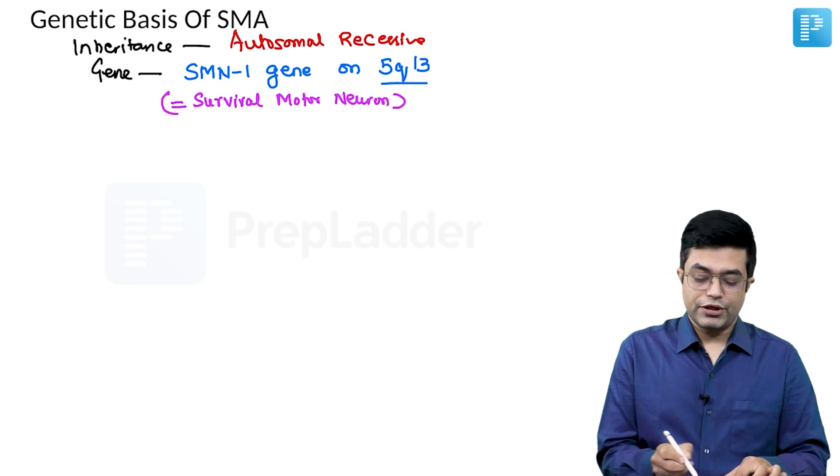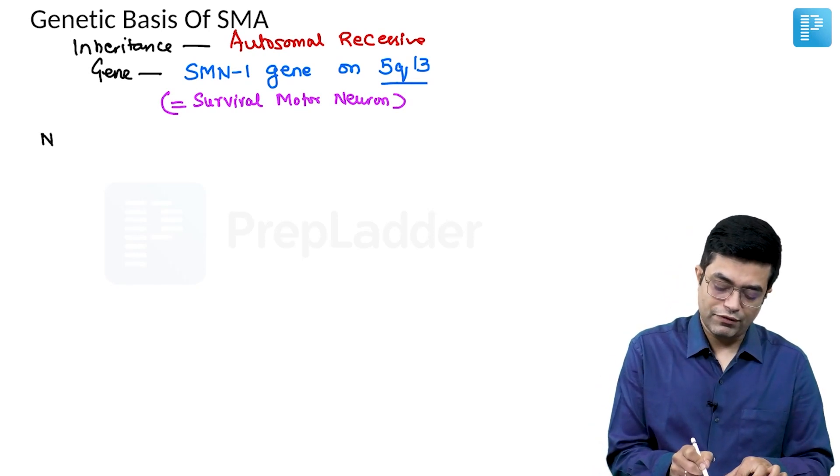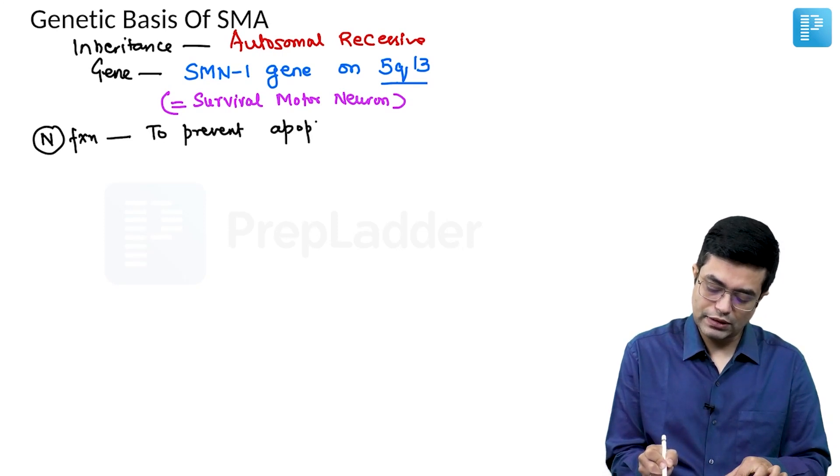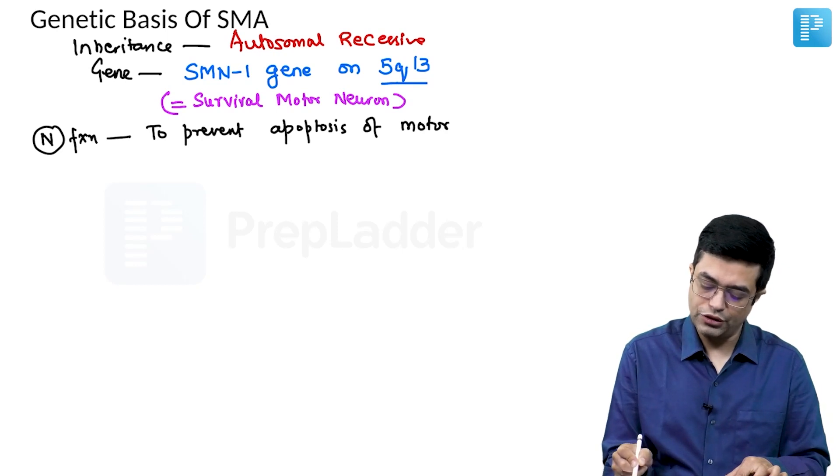What is the normal function of this gene? Normal function of this gene is to prevent apoptosis of motor neuron neuroblasts.